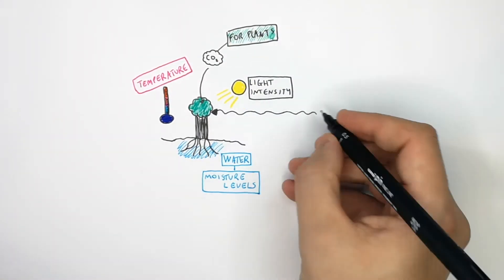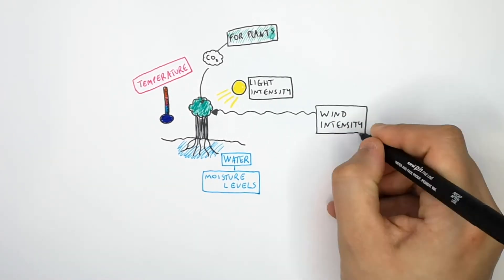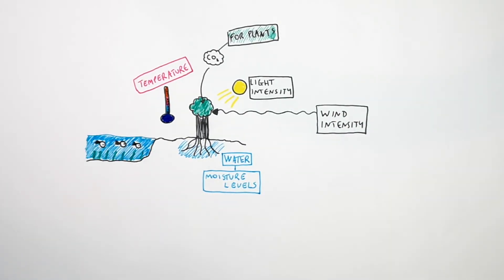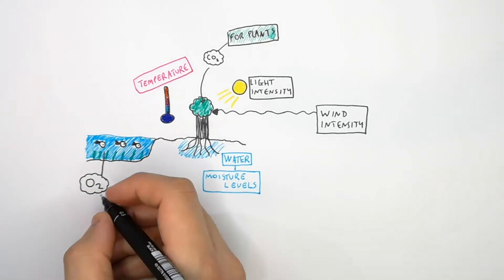Another abiotic factor is wind intensity. And for both plants and animals and also prokaryotes, oxygen concentration is an abiotic factor.